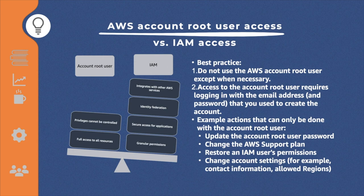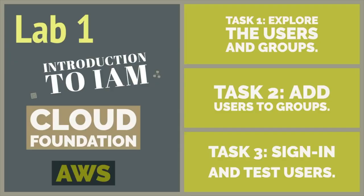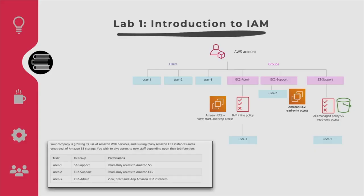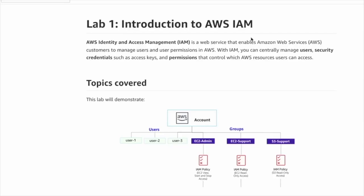Now let's do the first lab. In this lab, we will explore users and groups, add users to groups, and test different users by signing in and out of the management console. We have three users to create across three groups — each user assigned to a specific group with specific permissions. This is Lab 1: Introduction to AWS IAM. The IAM service enables us to create users and groups, assign permissions and security credentials, and control how they access the console — via management console, web console, or CLI.